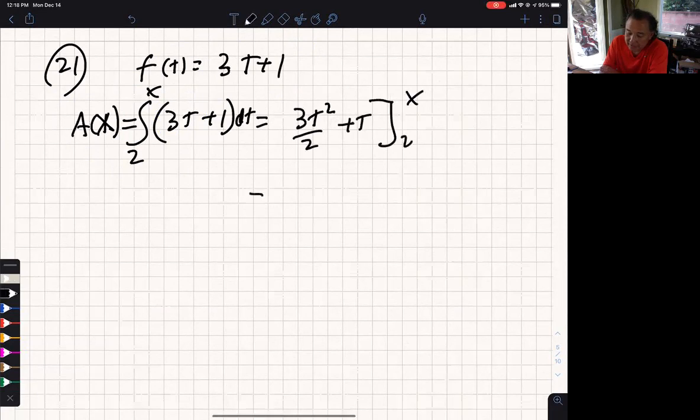Next step, fundamental theorem: plug in x for all my t's. So I'm going to get 3x² over 2 plus x. And then I plug in 2 and I subtract that.